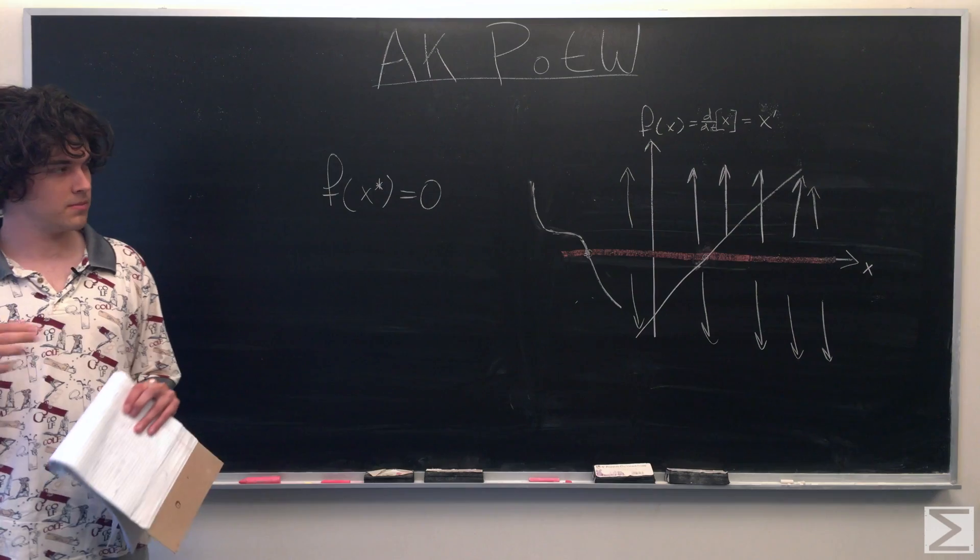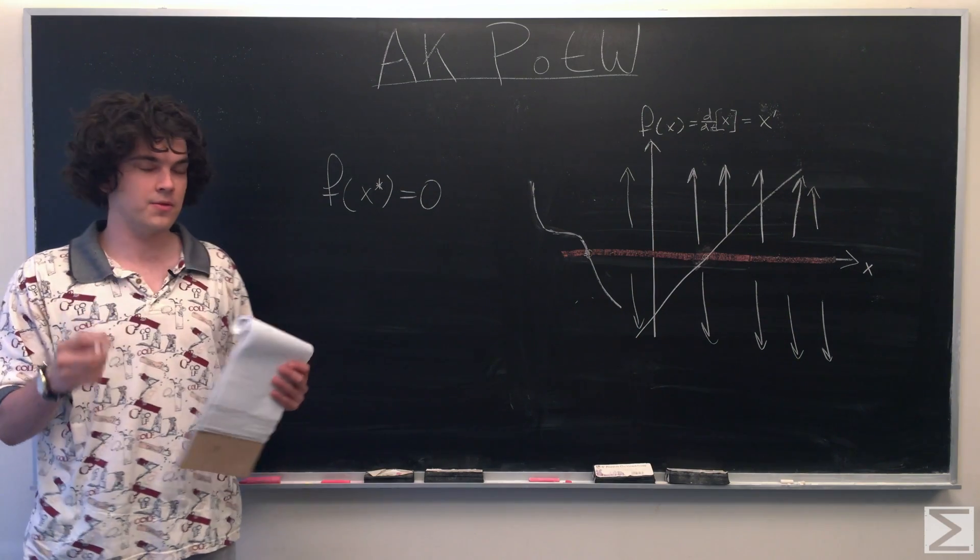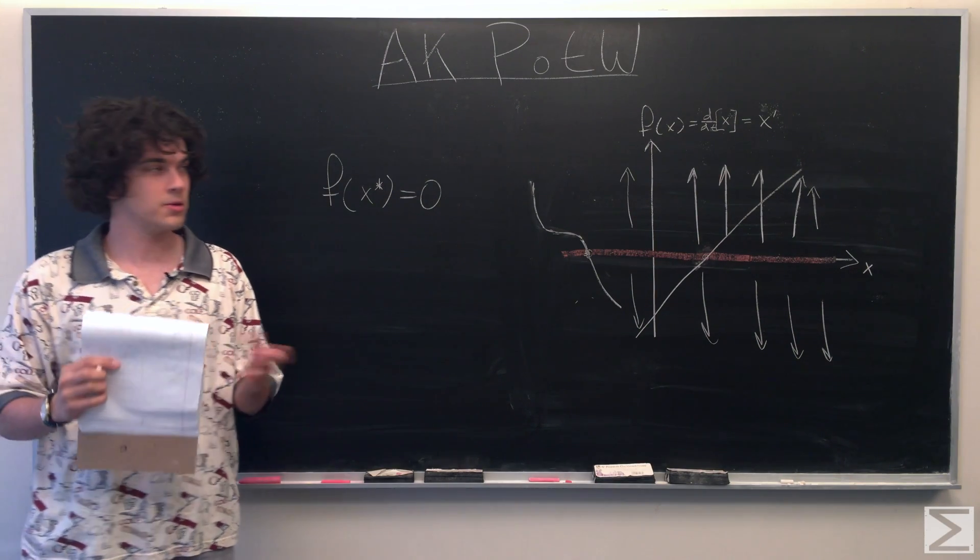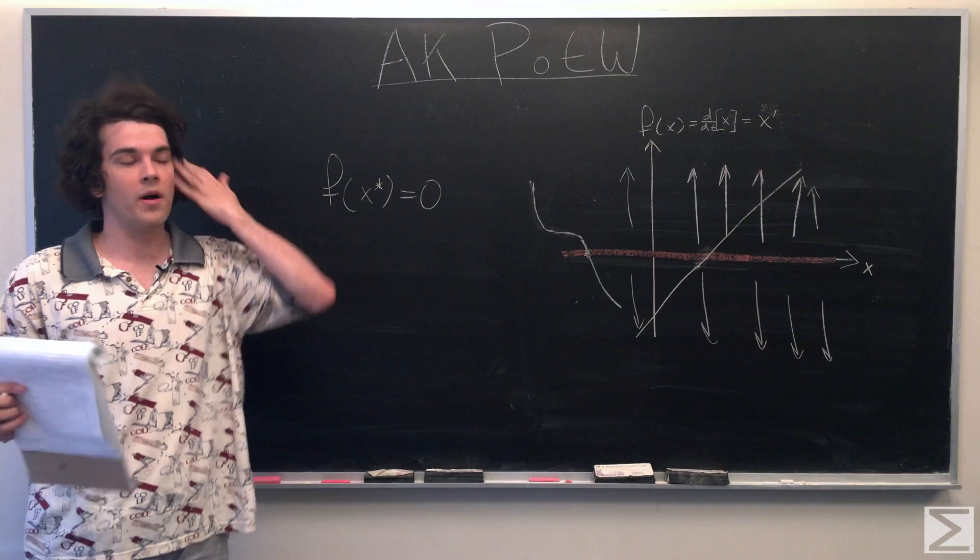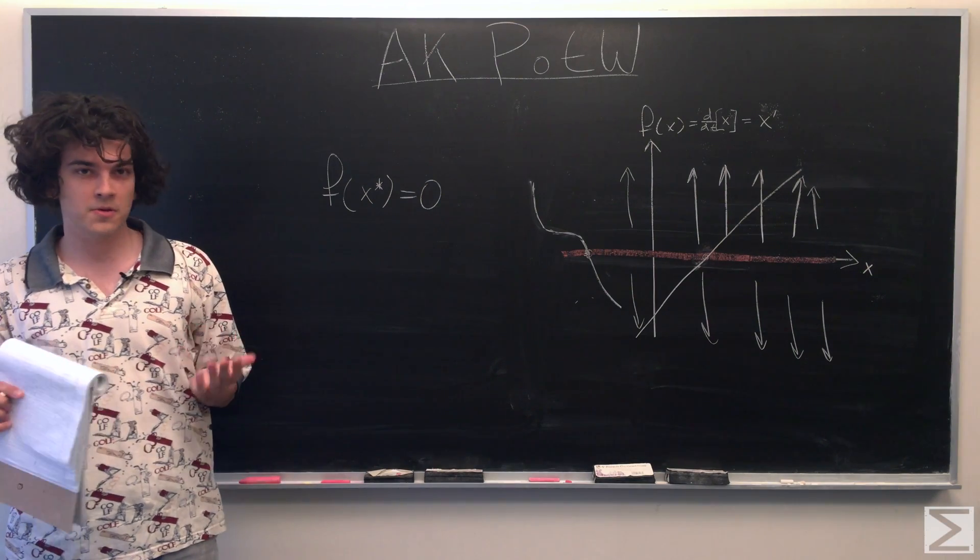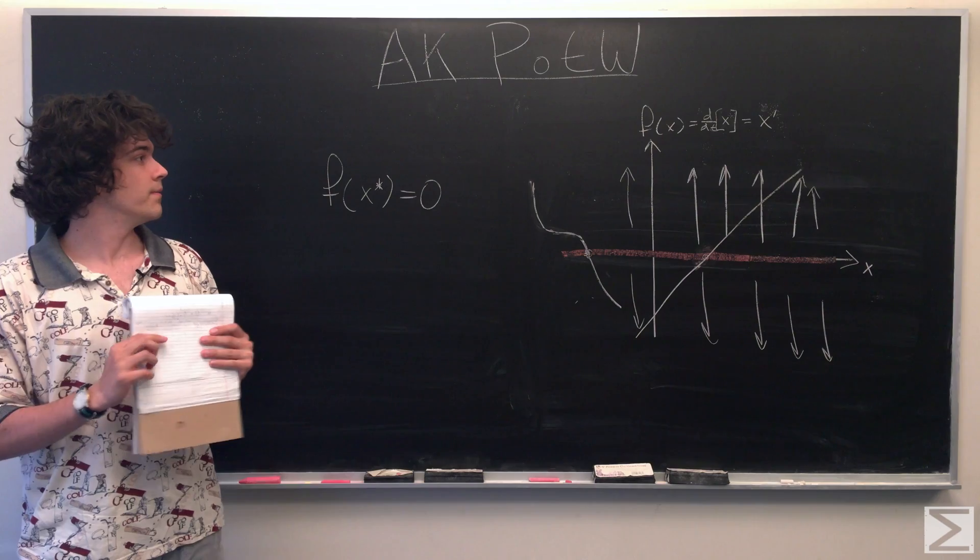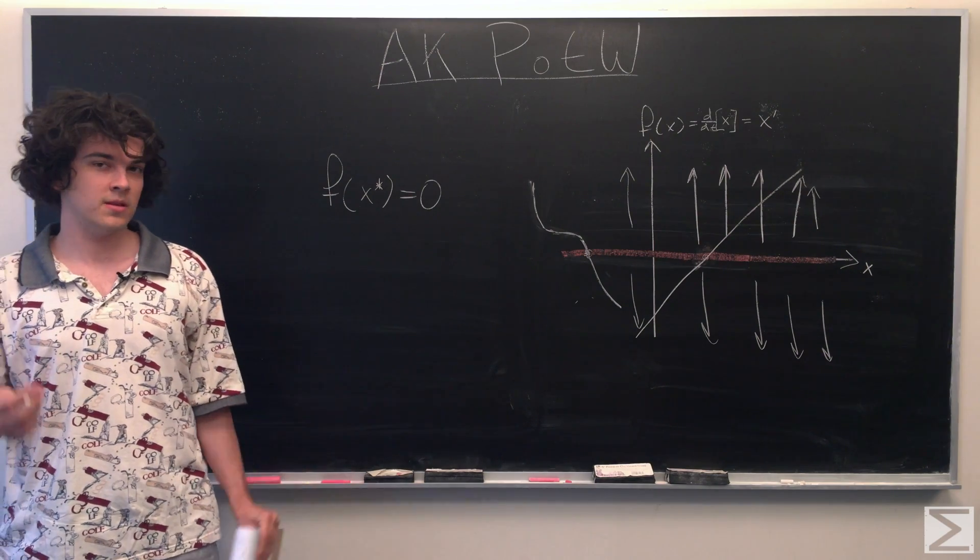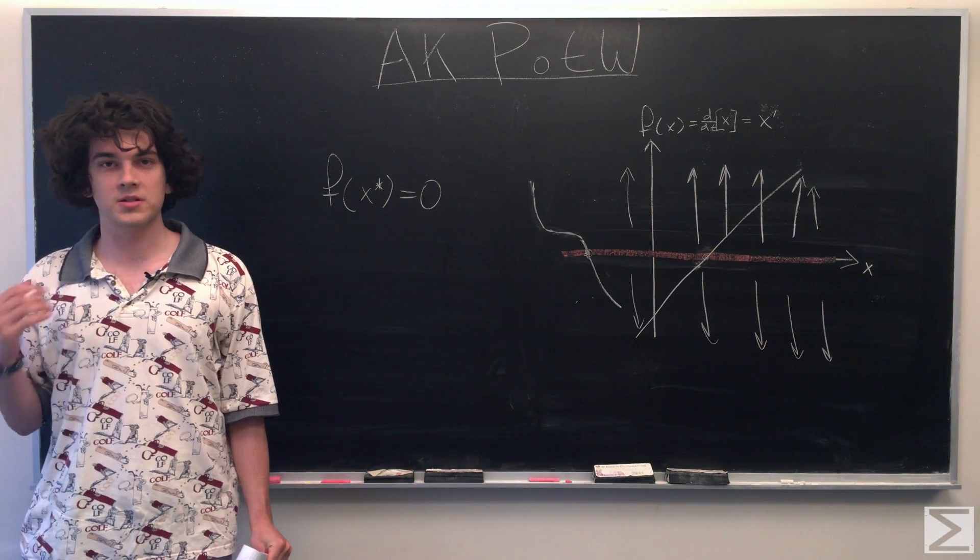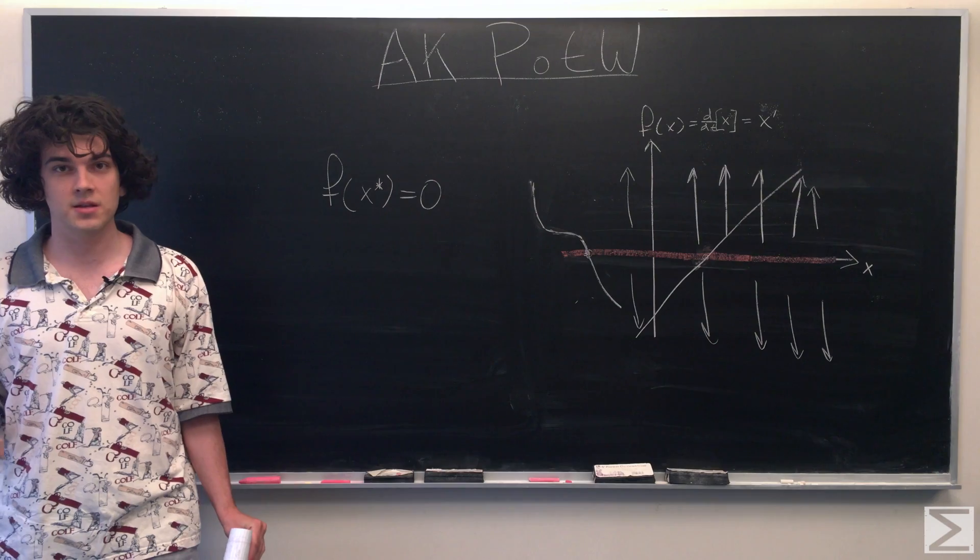So this is kind of a graphical and descriptive explanation of when a fixed point is stable or unstable so far, but we want a quantitative statement that we can say when a fixed point is stable versus when a fixed point is unstable.